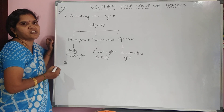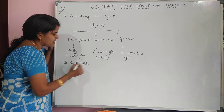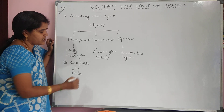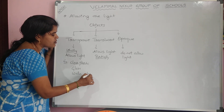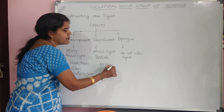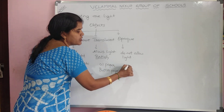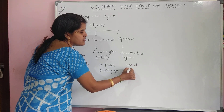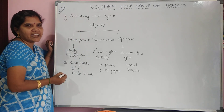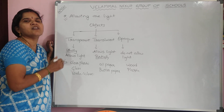Examples for transparent: clear plastic, clear glass, clean water. Examples for translucent: oil paper, butter paper, etc. Examples for opaque: wood, plastic. This is how objects are divided based upon allowing of light into three categories — transparent, translucent, opaque.